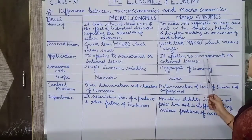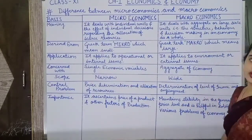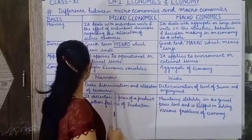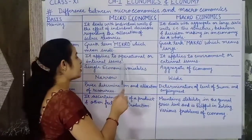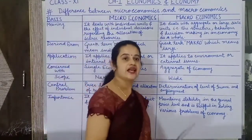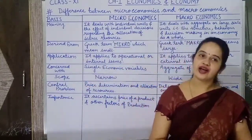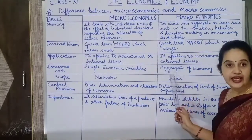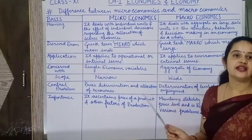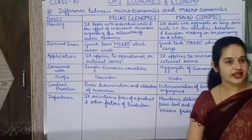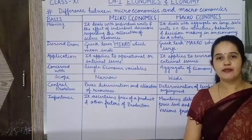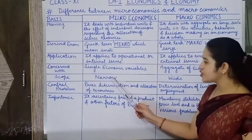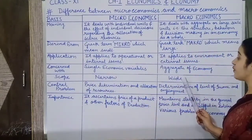The fourth difference: microeconomics is concerned with single economic variables such as consumer, demand, price, etc. On the other hand, macroeconomics is the study of aggregates, and its subject matters are aggregate output, national income, and so on. Regarding scope, microeconomics scope is narrow whereas macroeconomics scope is wide.